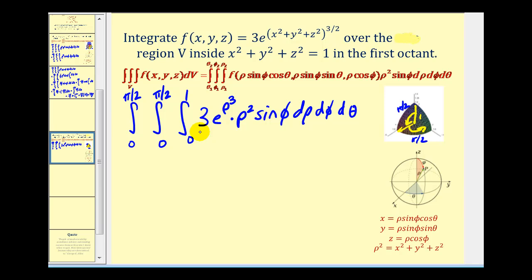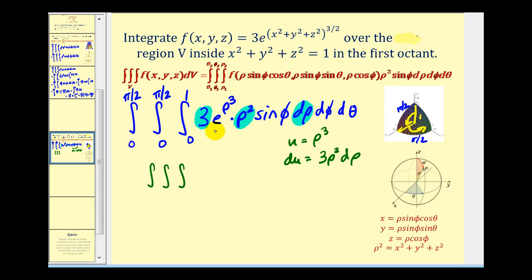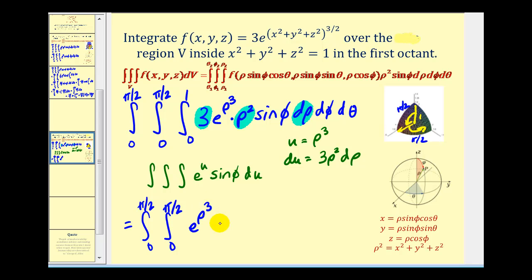Now let's integrate this, first with respect to rho. Notice we have an exponent of rho cubed, and then a factor of rho squared. This is going to require u-substitution where u is equal to rho to the third, so du is equal to three rho squared d rho. That's good news because our integrand already has a factor of three rho squared d rho. So written in terms of u, we just have e to the u sine phi du. This gives us e to the u sine phi, or e to the rho cubed sine phi.